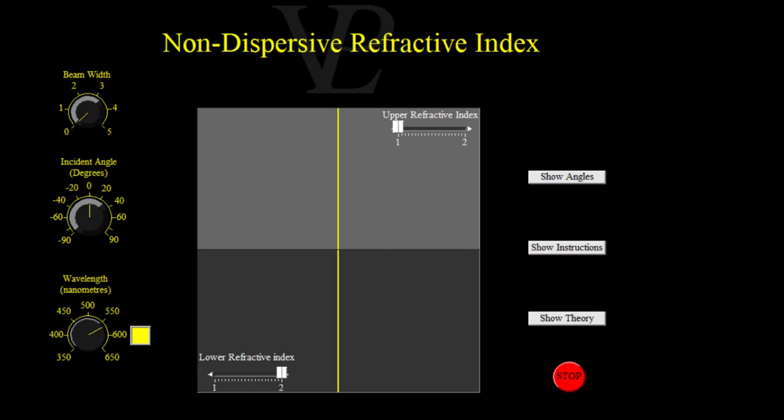However, increasing the width of the beam so that you can see the wavefronts reveals the process. You will notice that the light slows down as it enters the glass and the wavefronts become closer together.